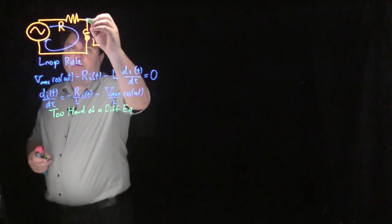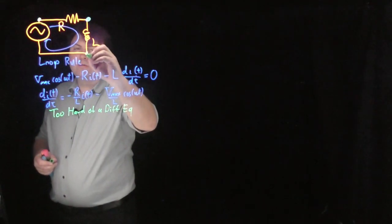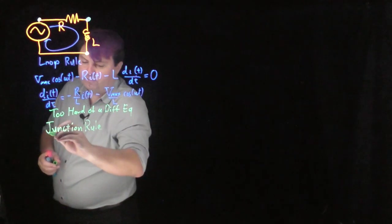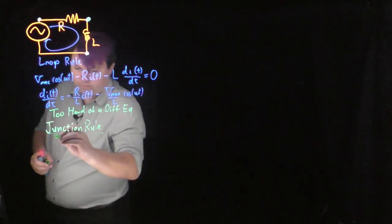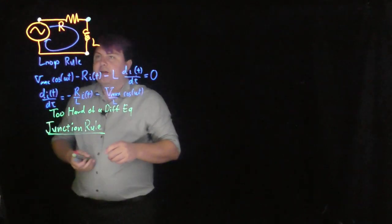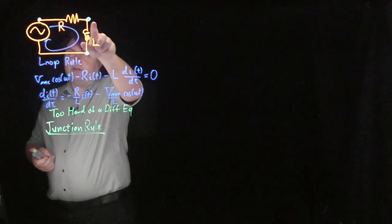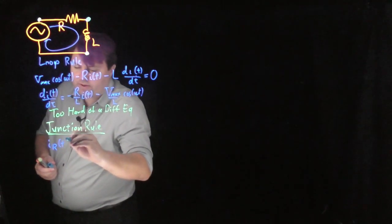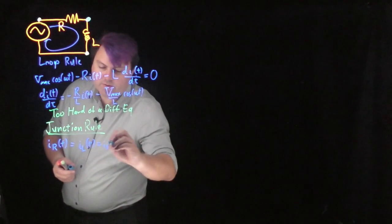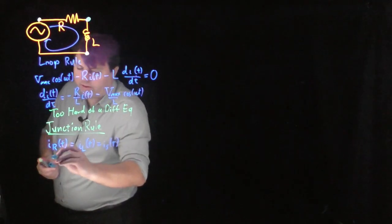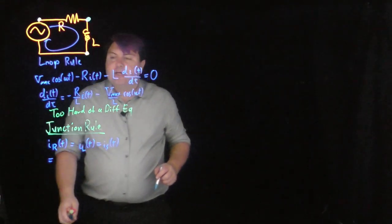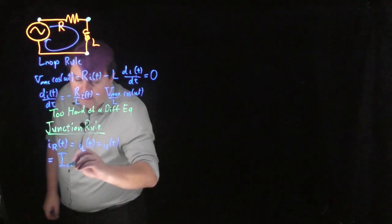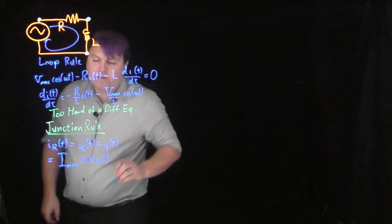Using the junction rule, the current through the source equals the current over the resistor equals the current over the inductor. So I_R(t) = I_L(t) = I_source(t) = I(t). Since current is the shared measurement, we want the phase of the current to be zero and compare everything else to it. We can write this as I_max cosine(ωt).